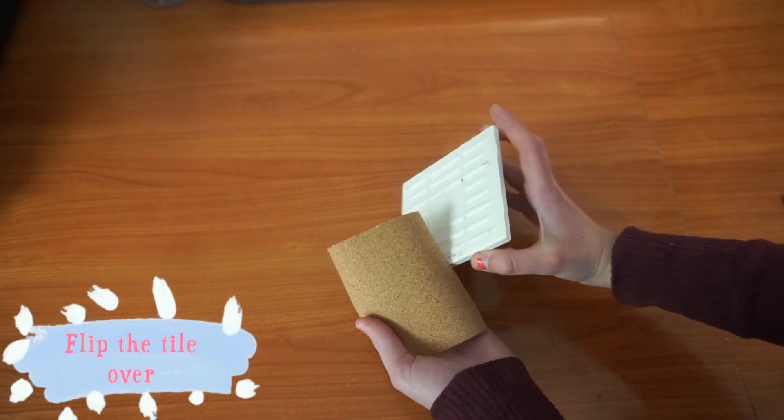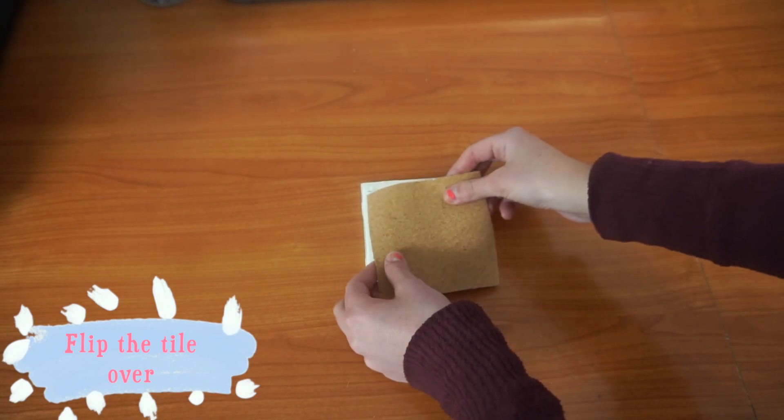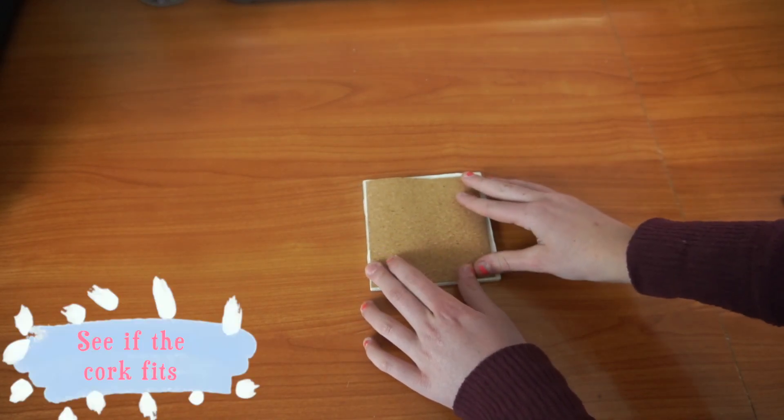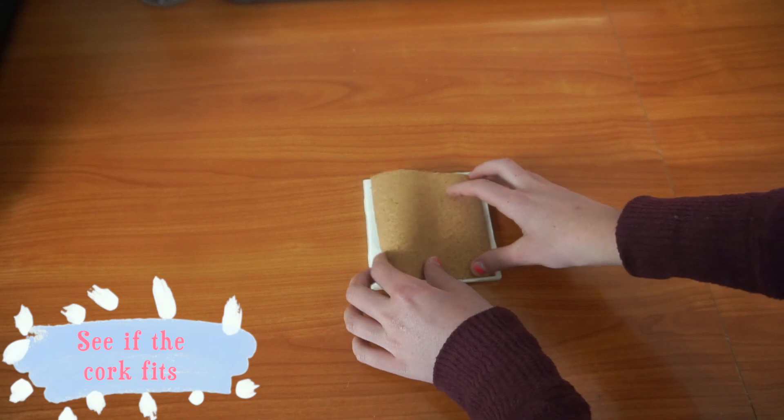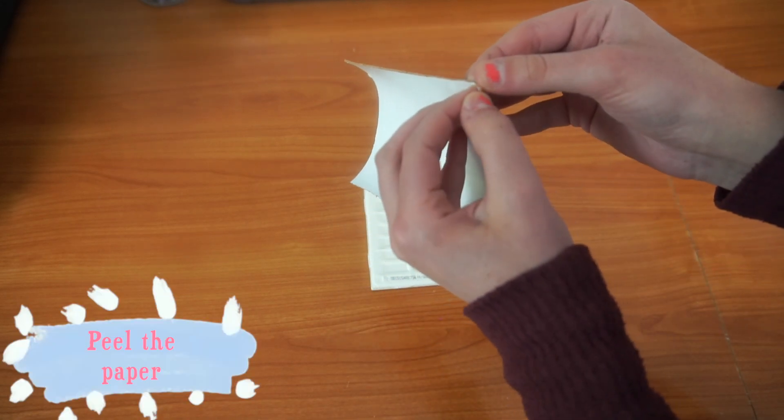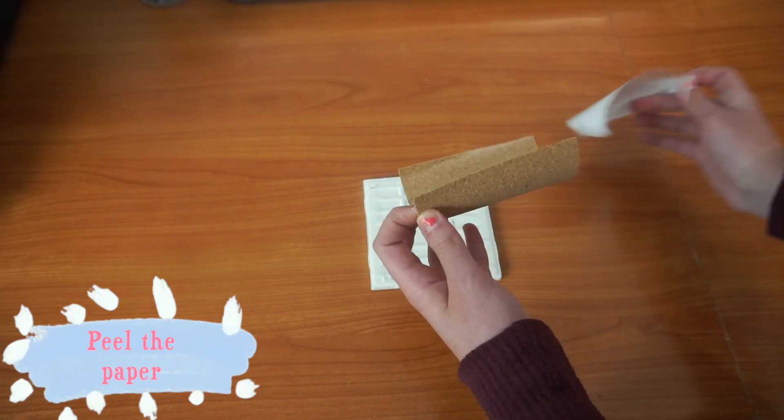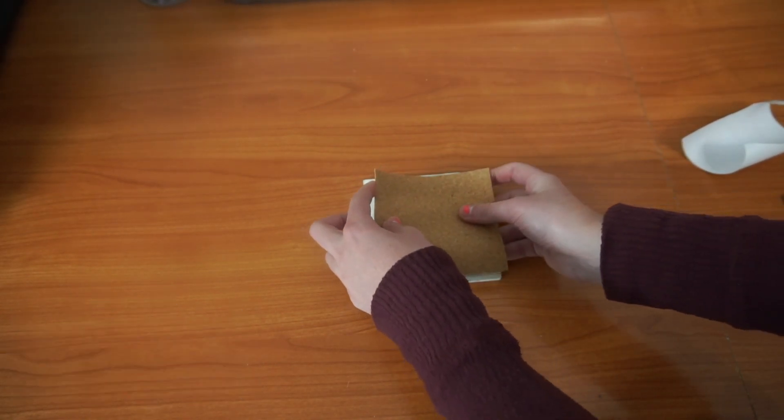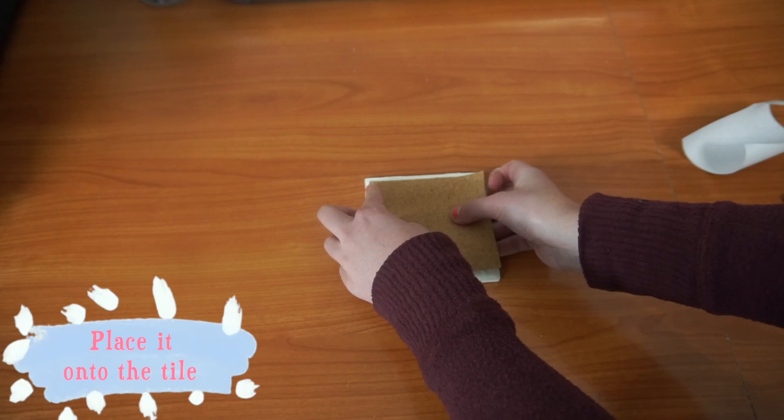Flip the tile over. See if the cork roll fits. If the cork roll does not stay in the square of the back of the tile, then cut it to make it fit. Peel the paper of the cork roll. Place the cork onto the tile.